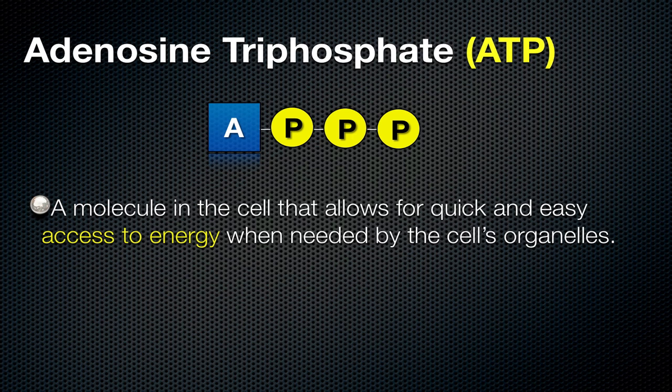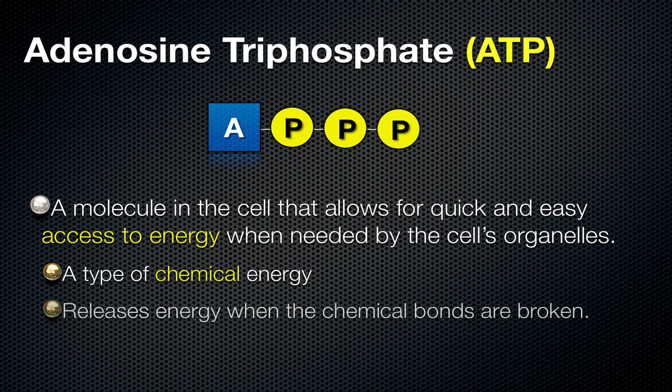When the cell needs energy, it gets it from ATP. It's a type of chemical energy in that it releases energy when the chemical bonds are broken. When the bond is broken between two phosphate groups, that releases energy. Let's take a look at how exactly this happens in the cell.